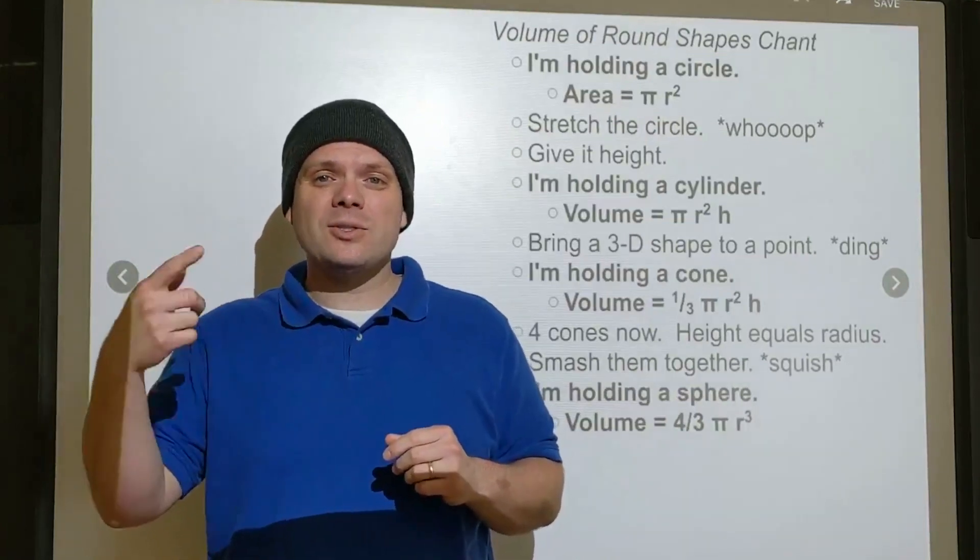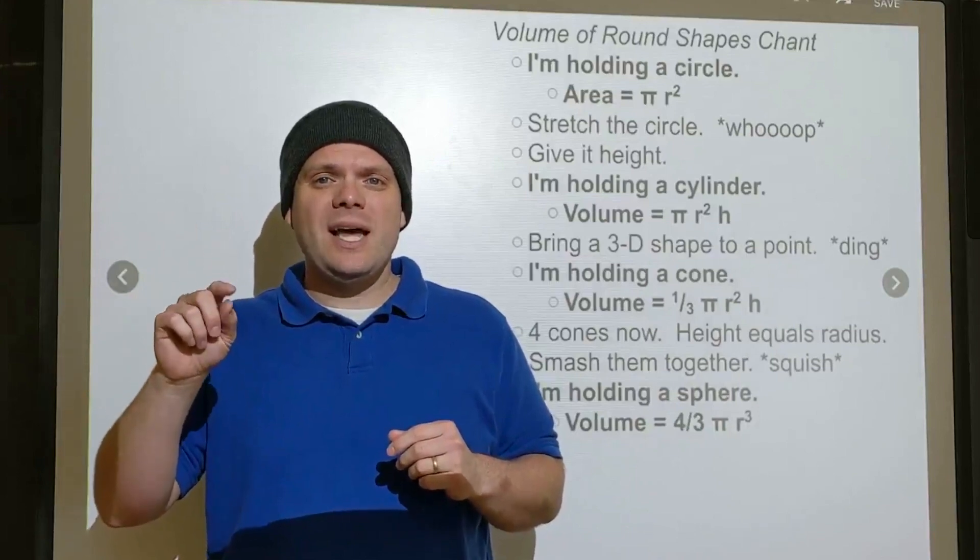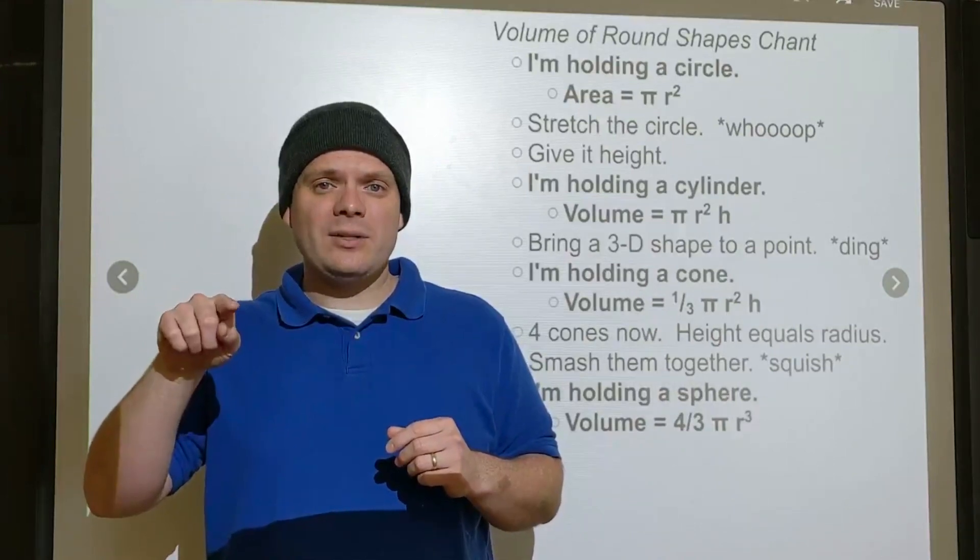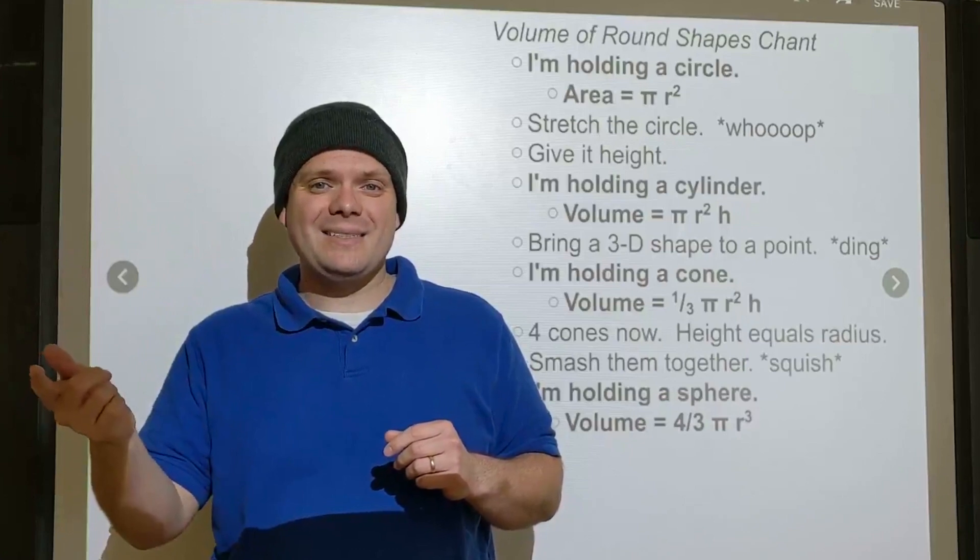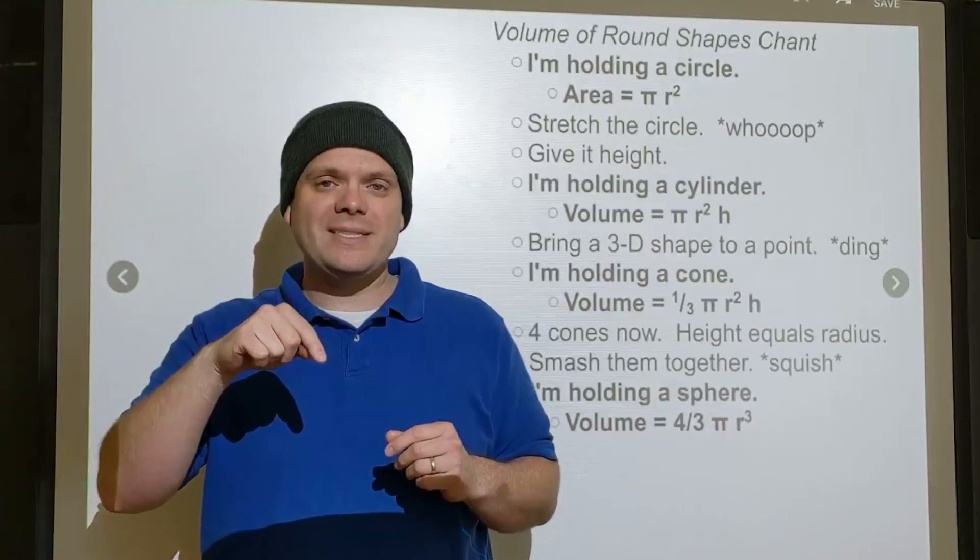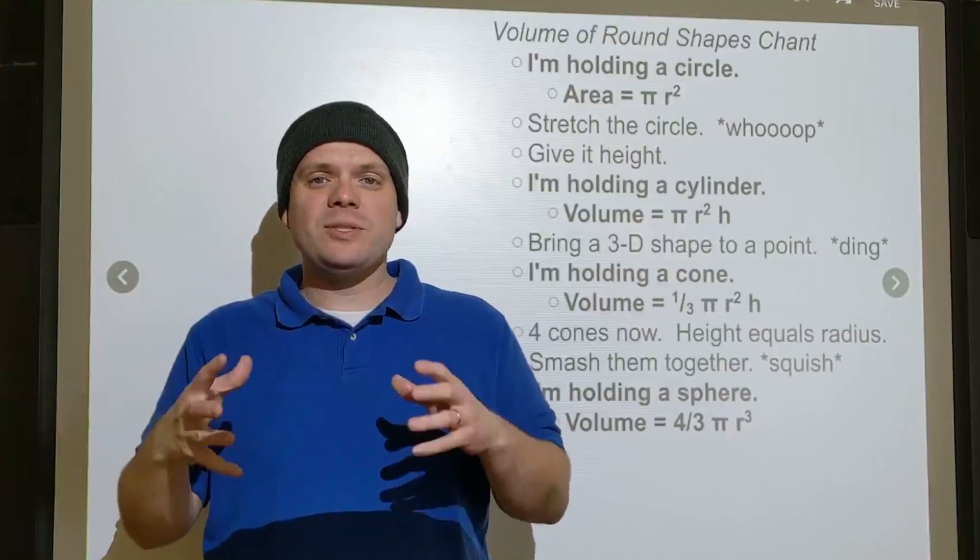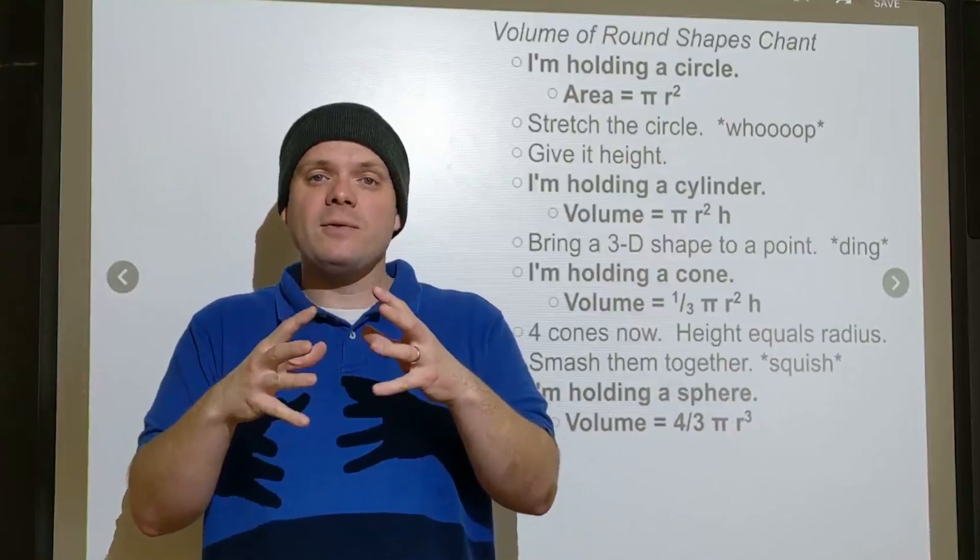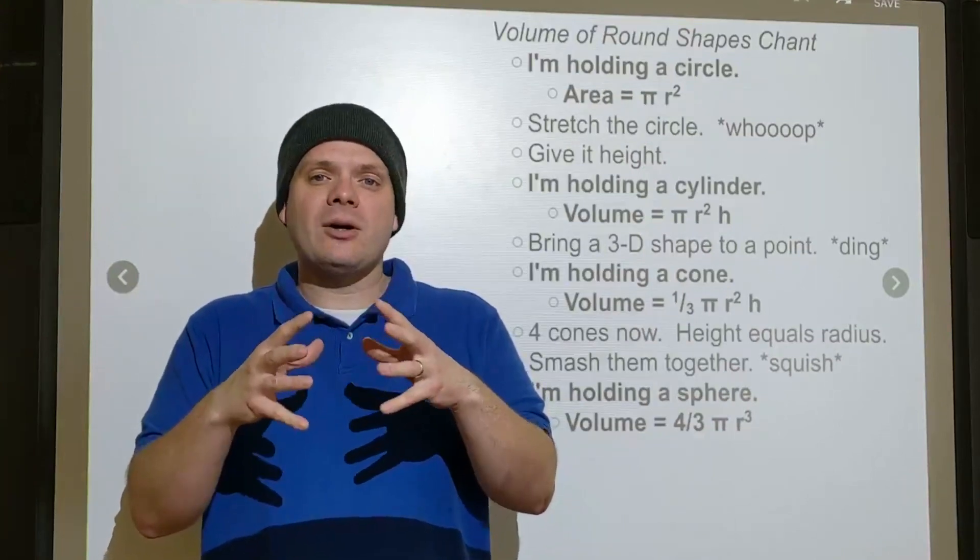And so we have, instead of one-third for the cone, we have four-thirds because there's four cones. Four-thirds pi r squared, and instead of r squared, remember the height became the same as the radius. So that's pi r cubed. So for a sphere, four-thirds pi r cubed.